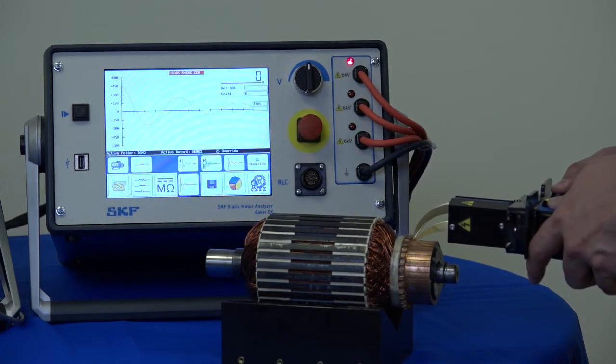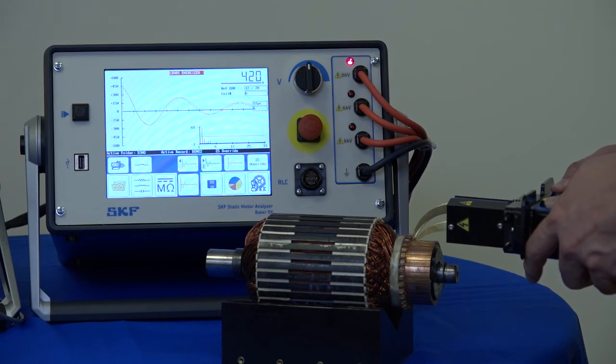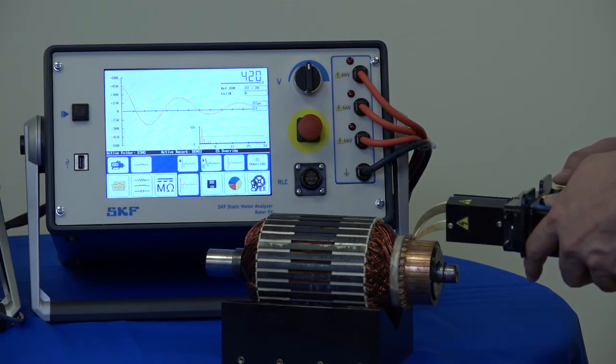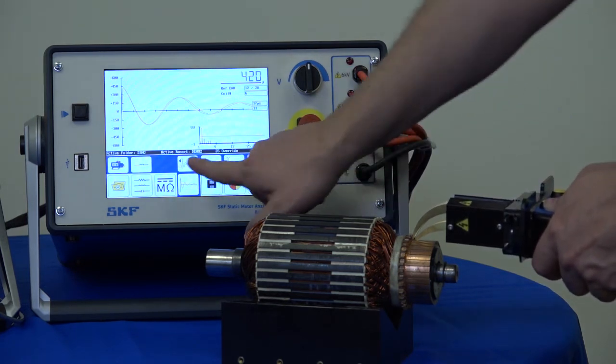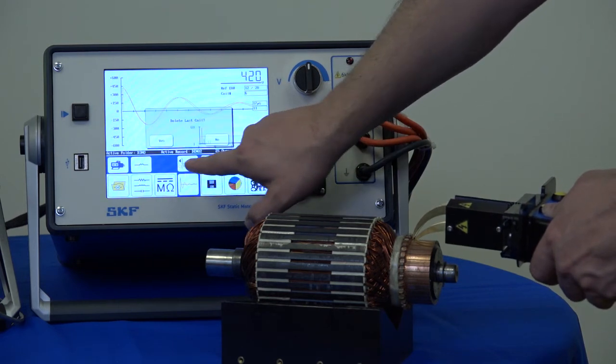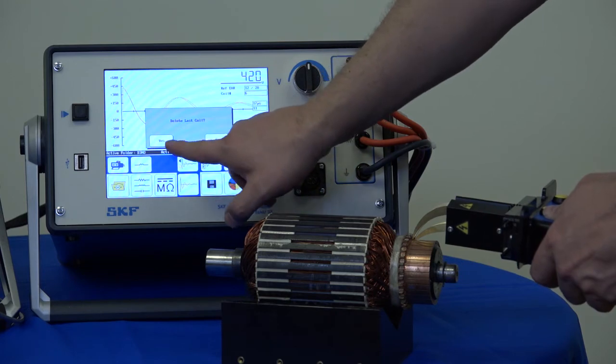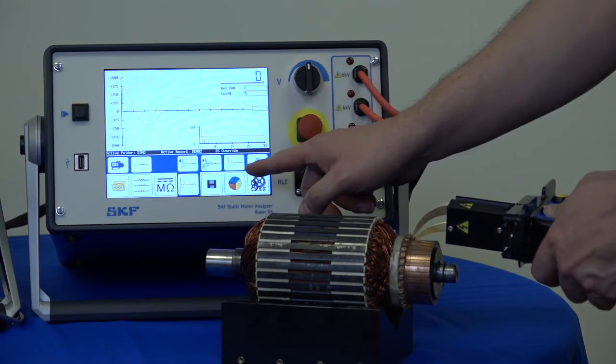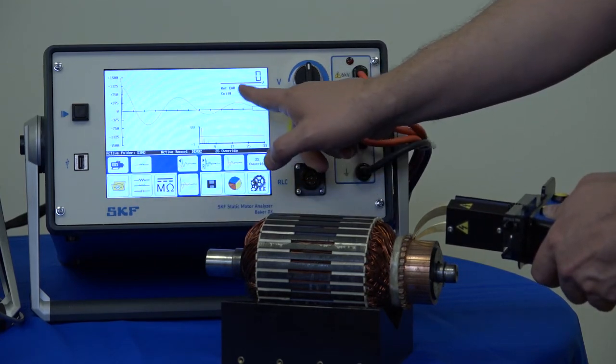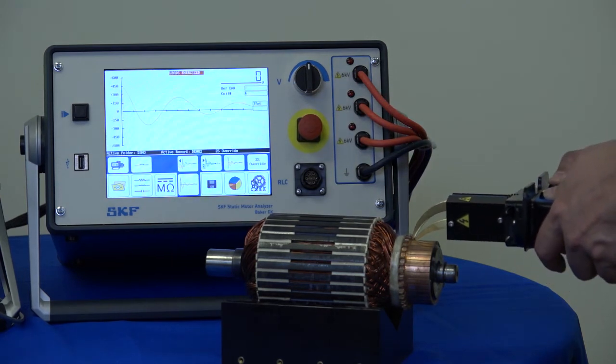I'll do one more capture here. Now if I made a mistake and I need to go back, I can select the delete wave. And that will delete the last waveform for the last coil tested or the last bar to bar test. Click yes, and that will change the reference coil back to the last. And I can re-perform the test.